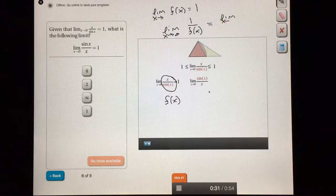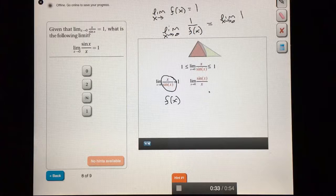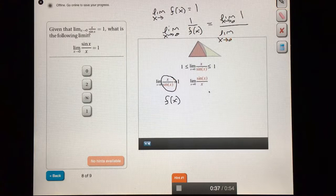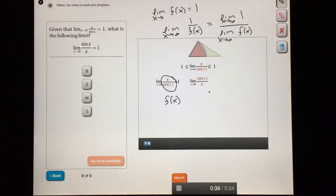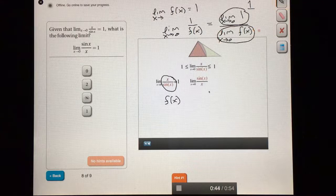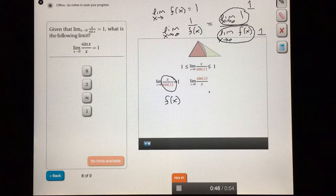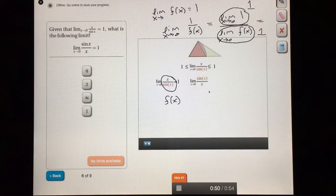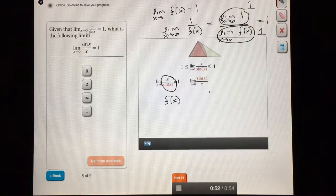This is equal to the limit as x approaches zero of one in the numerator divided by the limit as x approaches zero of f of x in the denominator. This limit is one, and this limit is also one. So it's not one of the bad cases for the quotient rule. And this total limit just comes out to one divided by one, which is one.